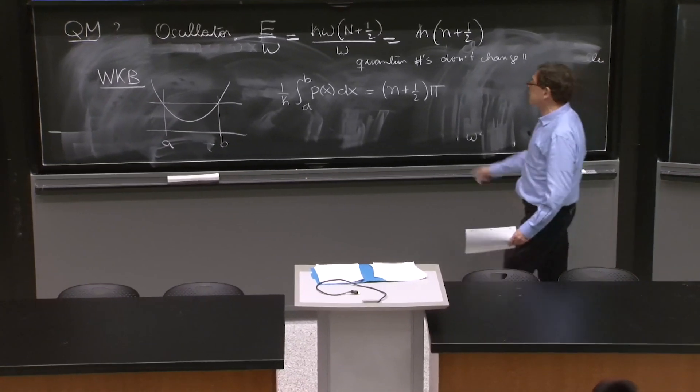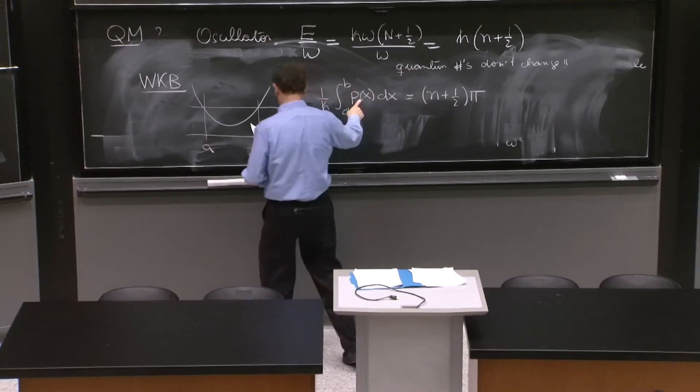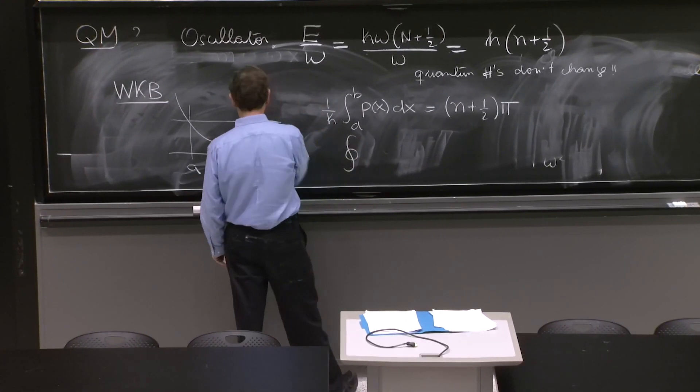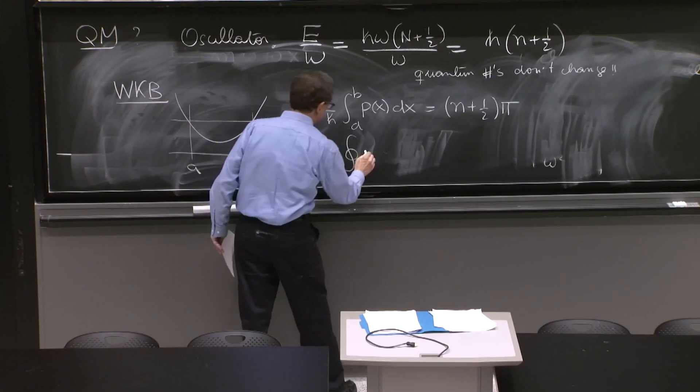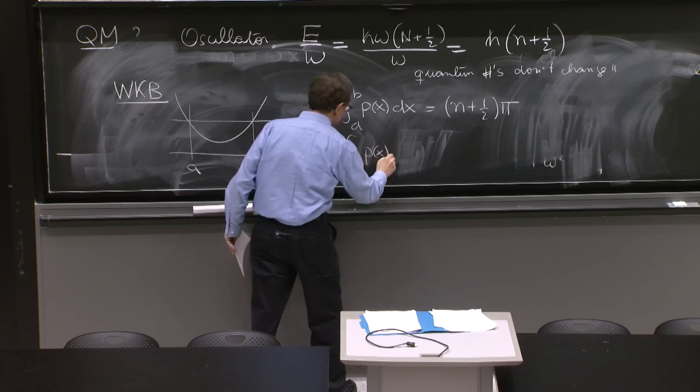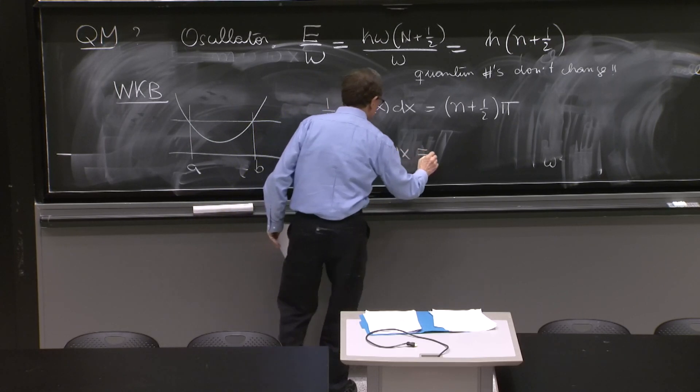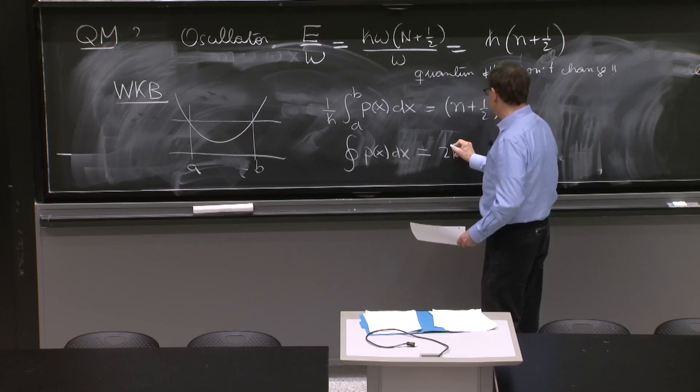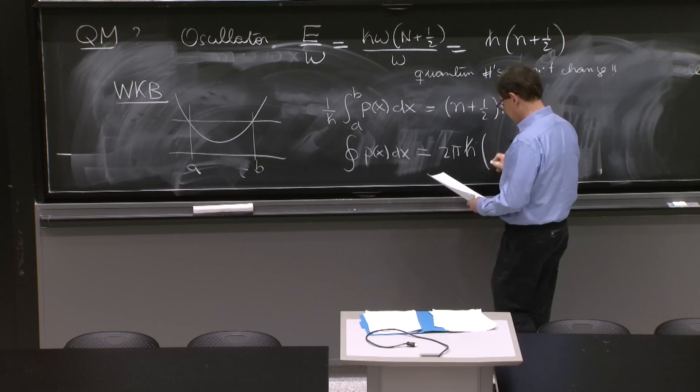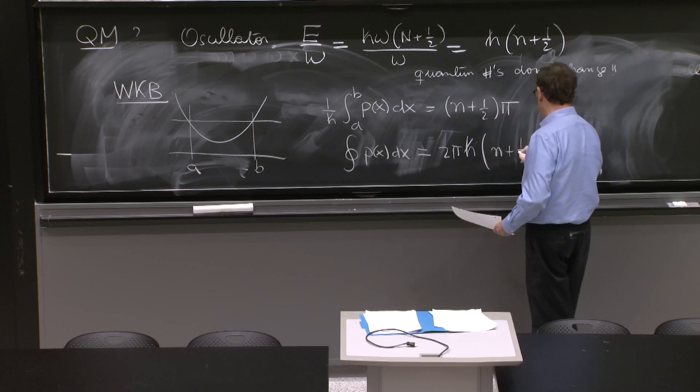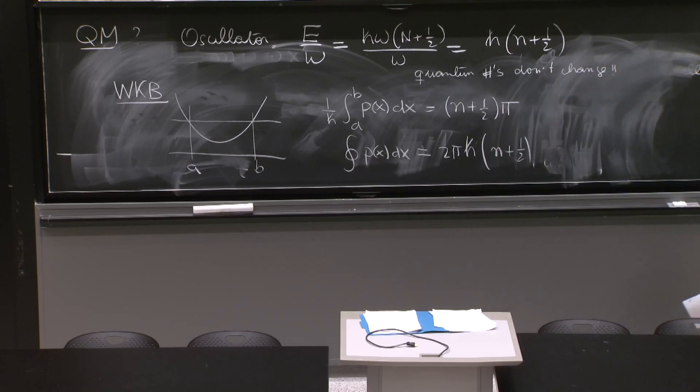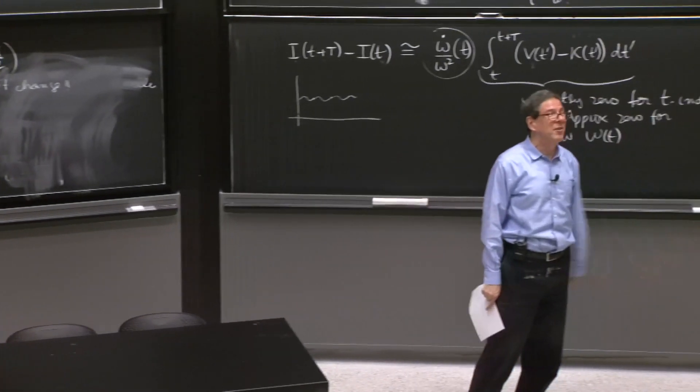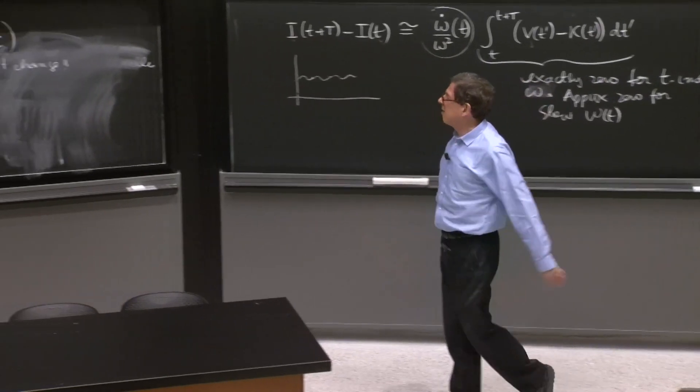So if you multiply by 2, this integral, that is the full integral over the back and forth of P of x dx is equal to 2 pi h bar n plus 1/2. That formula, if you remember, gave the oscillator exactly. But look how nice.